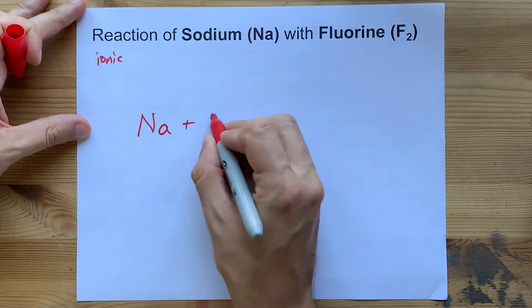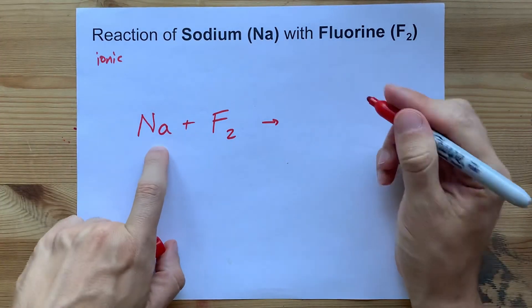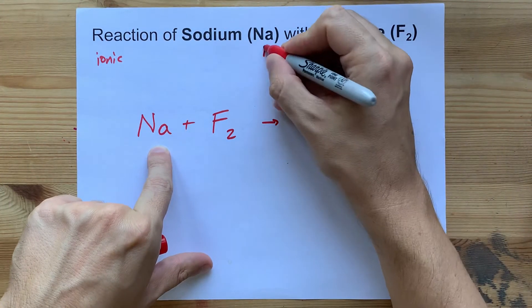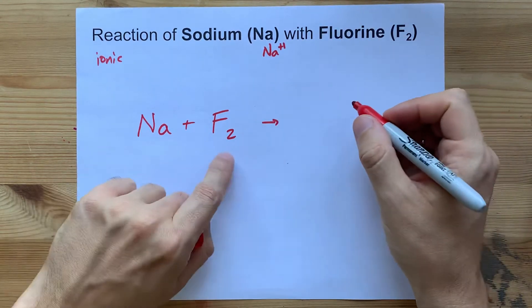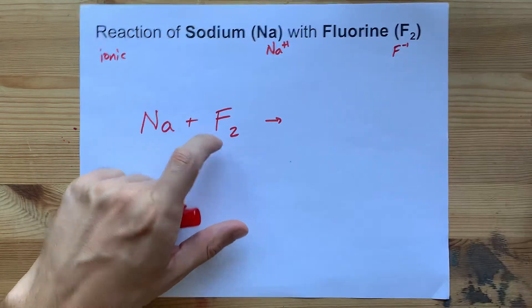Here we have the sodium metal and the elemental fluorine. The sodium gives away an electron to become positive one charge. Each fluorine atom gains one electron to become minus one charge.